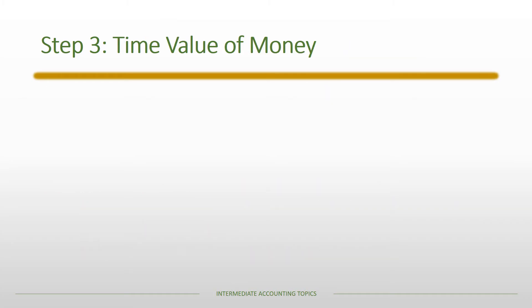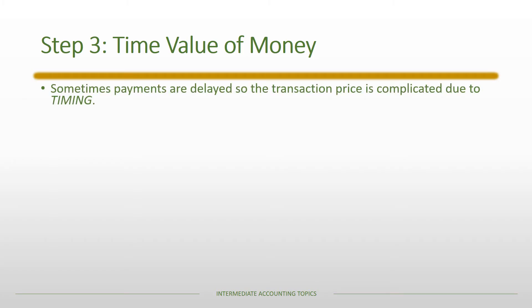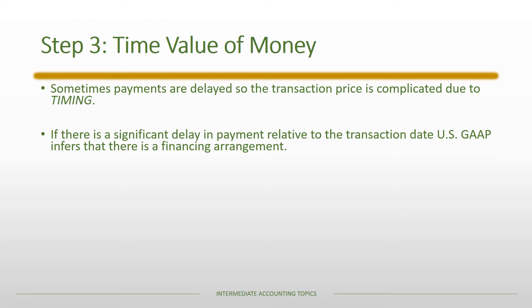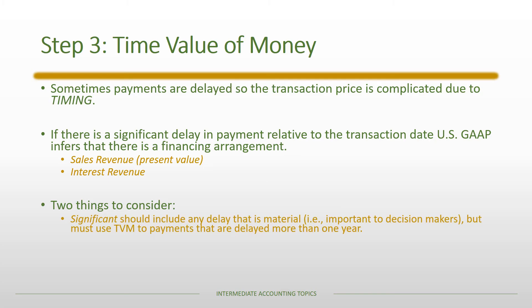A second complication is the time value of money — if there's a delay, the transaction price is complicated by timing. Specifically, if there is a significant delay, US GAAP infers there must be a financing arrangement. That means there is sales revenue, which is the present value of the payment, and then interest revenue is any amount above the present value that you ultimately receive. This is inferred even if there's no formal arrangement, because of the delay.